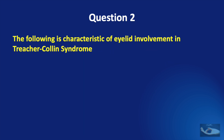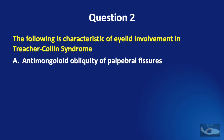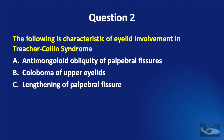Question 2. The following is characteristic of eyelid involvement in Treacher-Collins Syndrome. Options: Anti-Mongoloid obliquity of the palpebral fissures; coloboma of upper eyelids; lengthening of palpebral fissure; or thick layers of eyelashes.